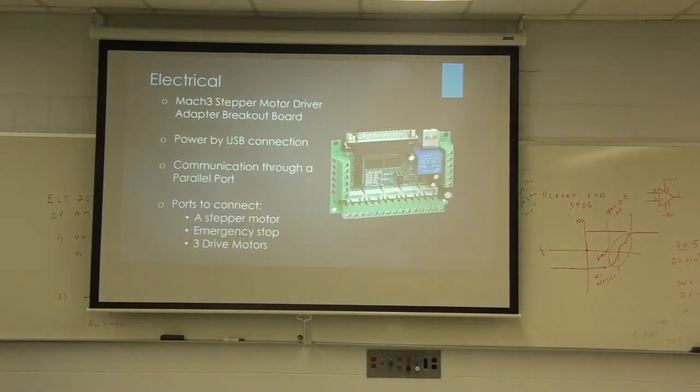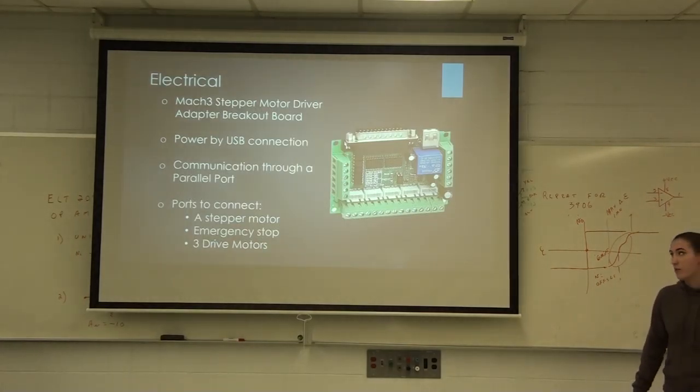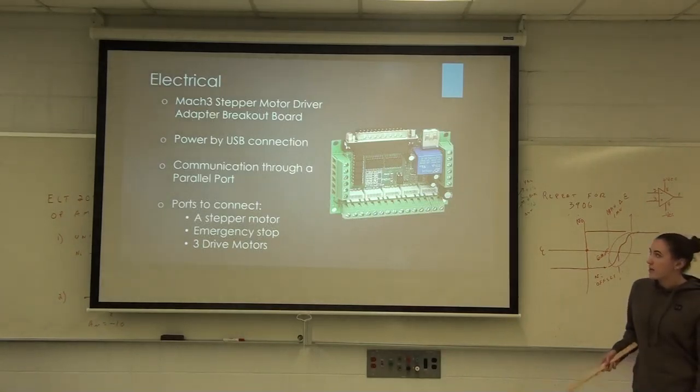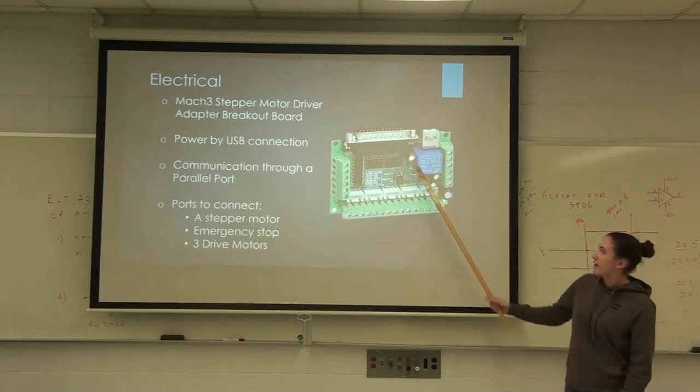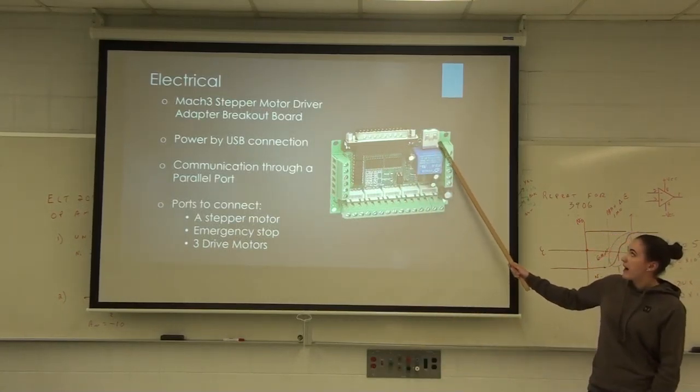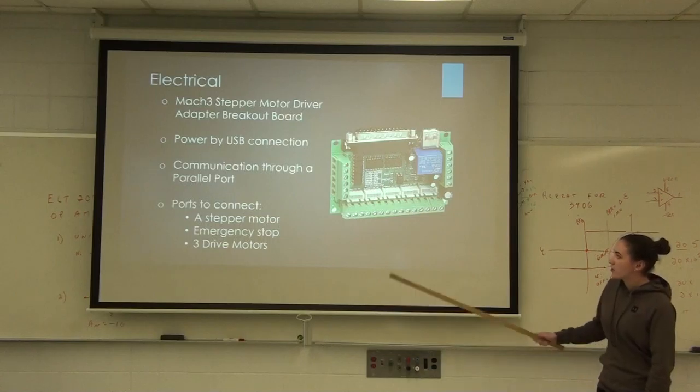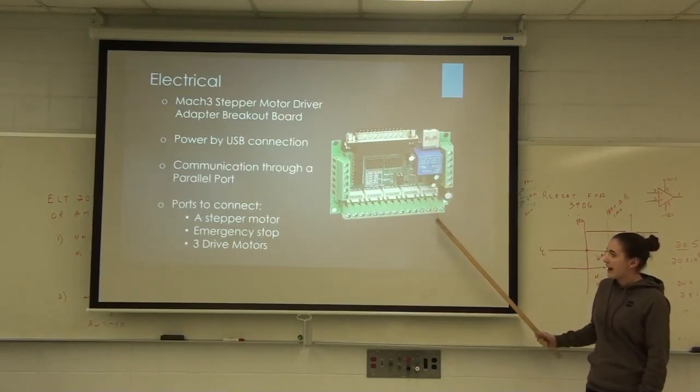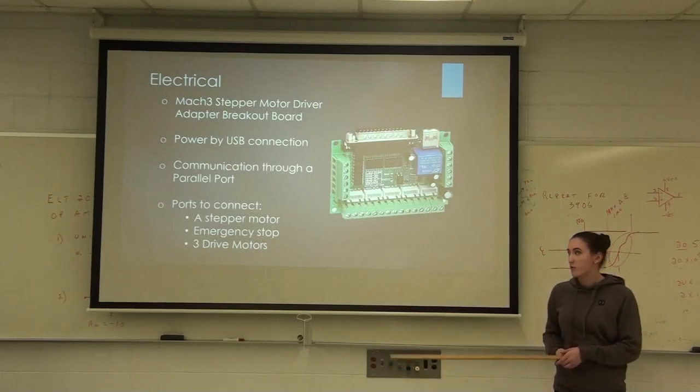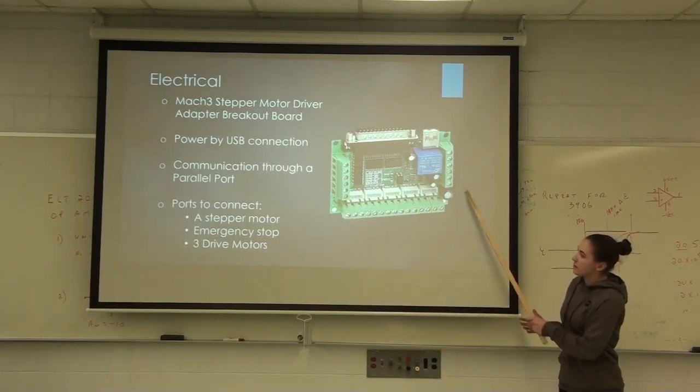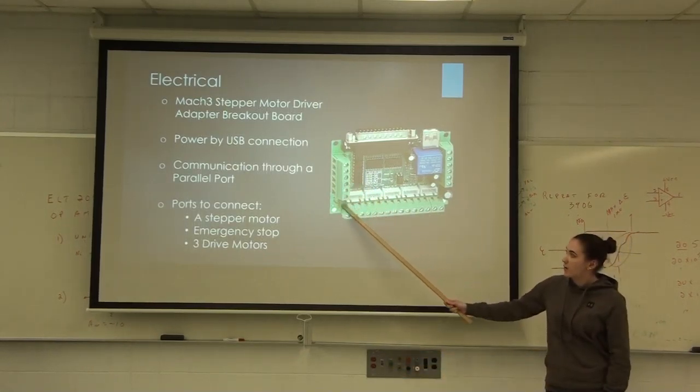And then this is the breakout board that I was just talking about. So we need this in order to take all the signals from our motors and our emergency stop and have them be able to go through the computer. And so this is all communicated through a parallel port, and then it's given power through the computer. And so then these are your X, Y, and Z access ports. So that's what we're using for my motor and his motor as well. And an emergency stop goes on this side, and then you feed power on this side.